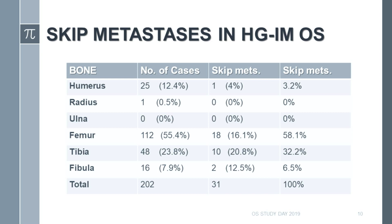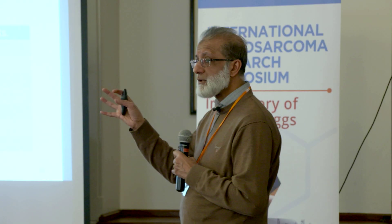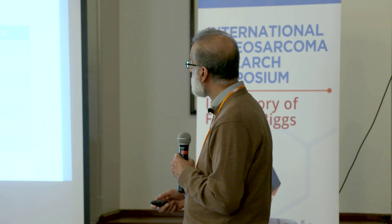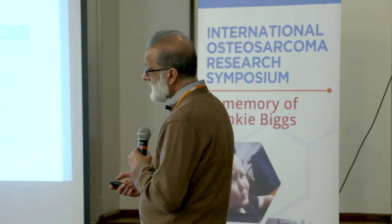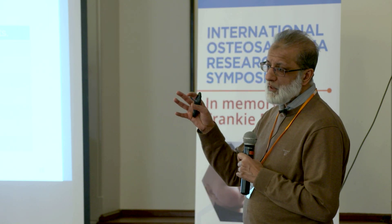Skip metastases occurred in the same bone in about 70%, were purely transarticular in about 13%, and involved the same bone and across the joint in about 16%. The tibia seems to be the commonest bone to have a skip metastasis, followed by the femur, whereas the majority of the skip metastases themselves — almost 60% — occur in the femur, and a third in the tibia. The humerus is not often involved. Notably, we did see two cases of skip metastasis within the fibula, so whichever major bone is involved, we must image the whole of it.